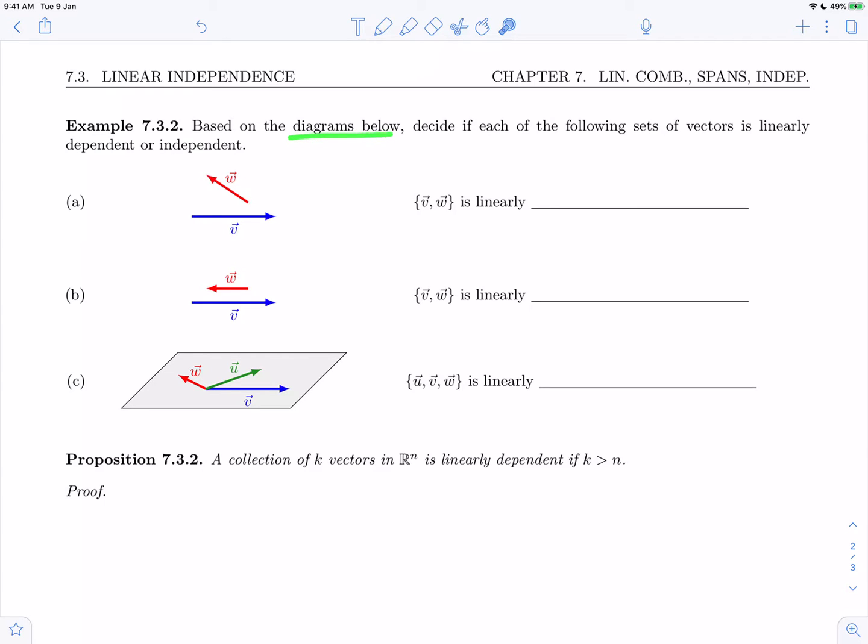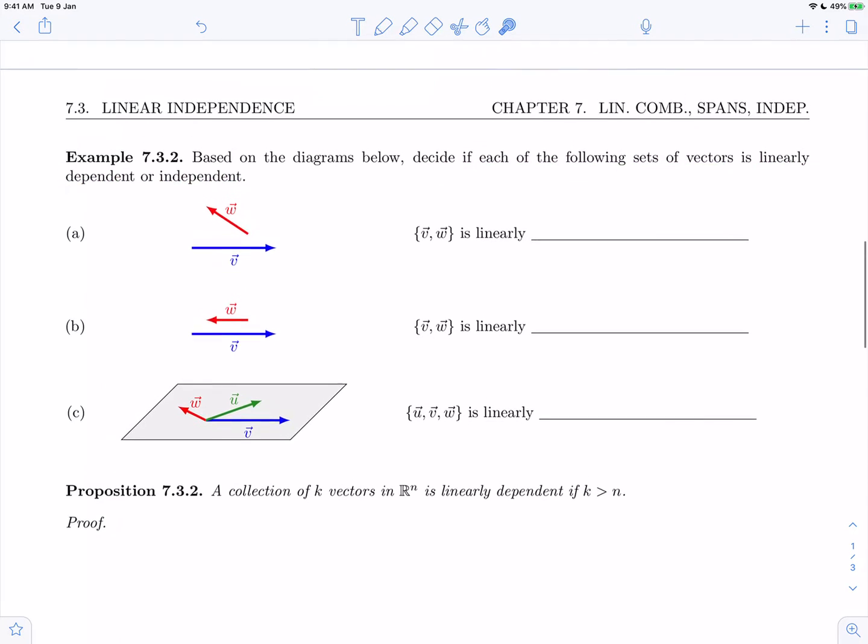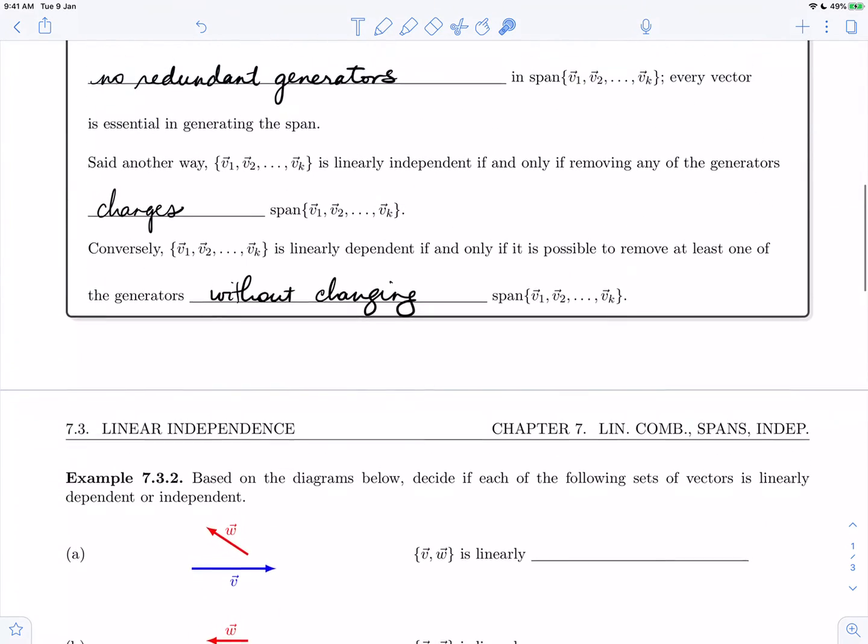Based on the diagrams below we're asked to decide if each of the following sets of vectors is linearly dependent or independent, and we're going to base ourselves on information that we saw in a previous video.